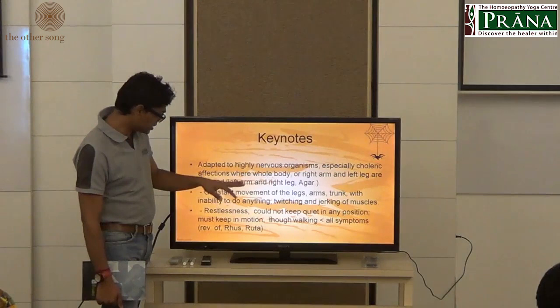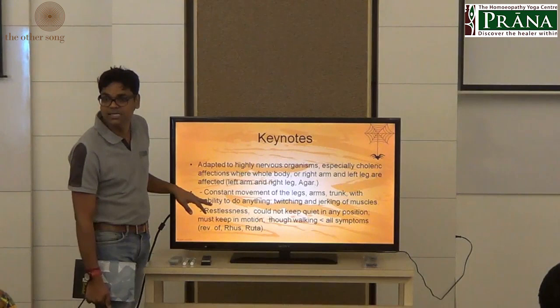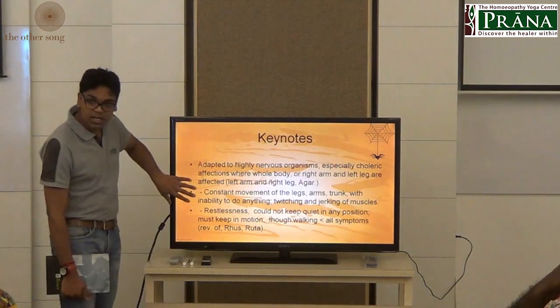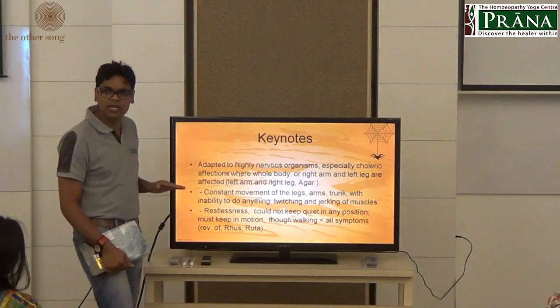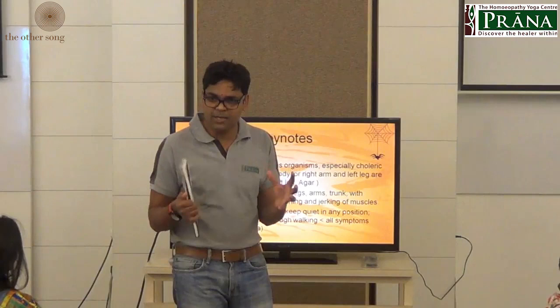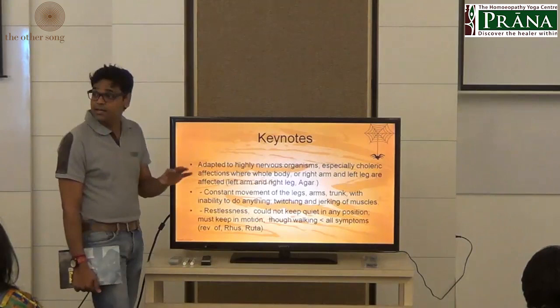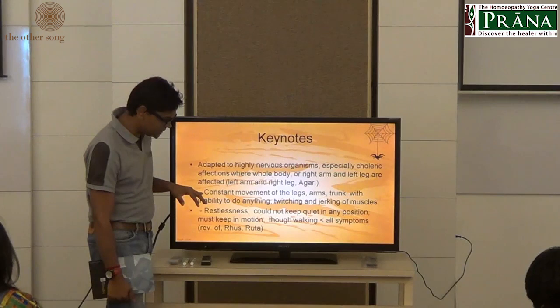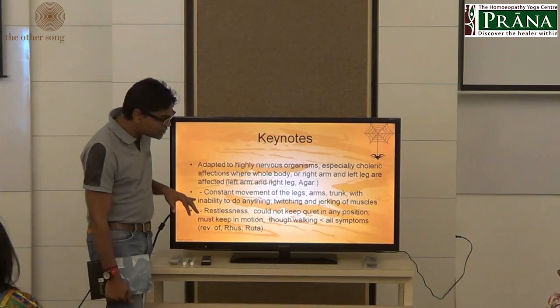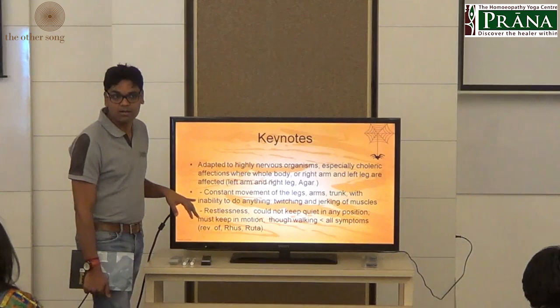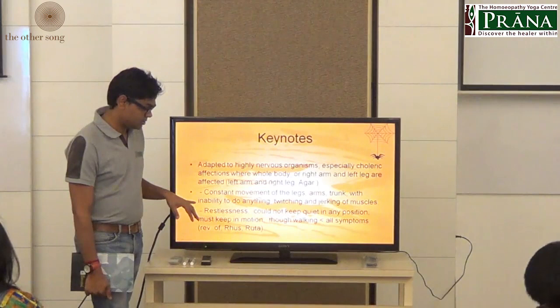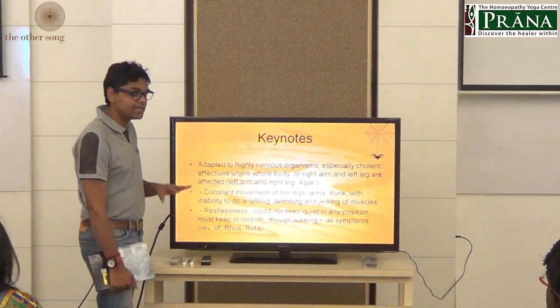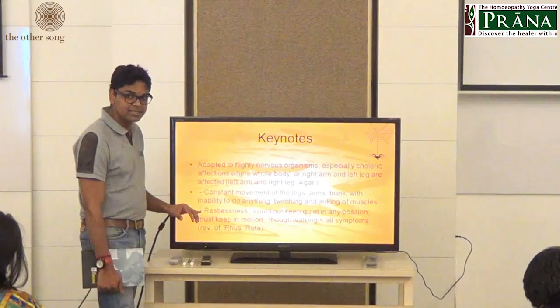Next: constant movement of the legs, arms, and trunk with inability to do anything — twitching or jerking of muscles. What is peculiar here? Up till now we learned there is restlessness and hyperactivity. But something more peculiar is: constant movement with inability to do anything. There is a polarity — due to hypersensitivity, constant movement, yet inability to perform purposeful action.